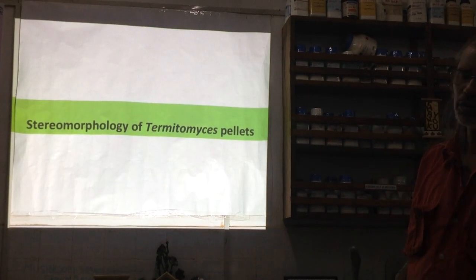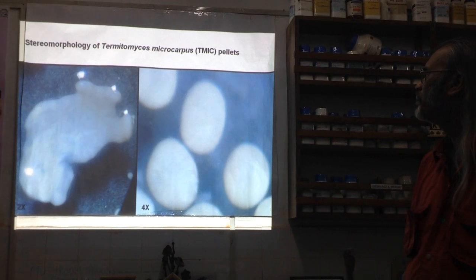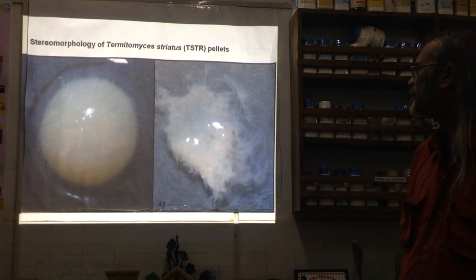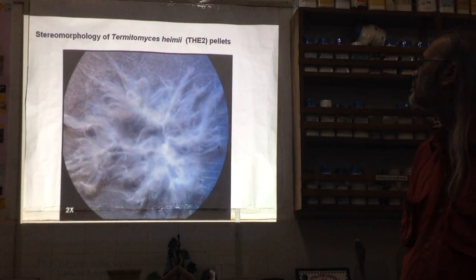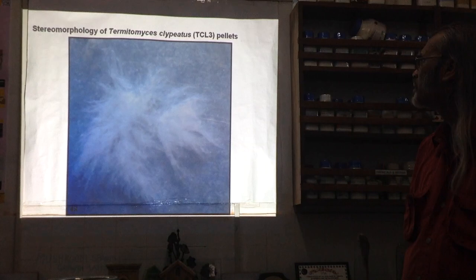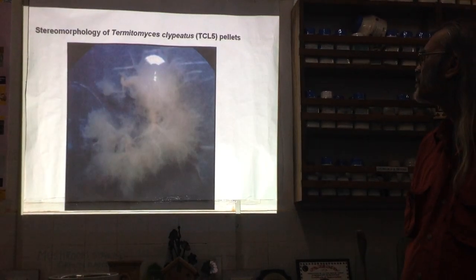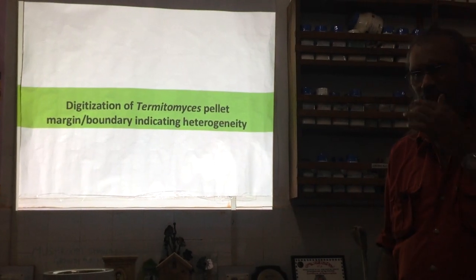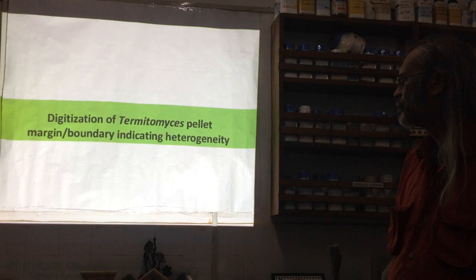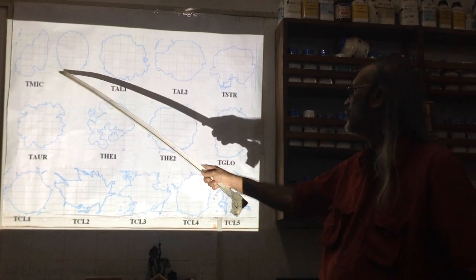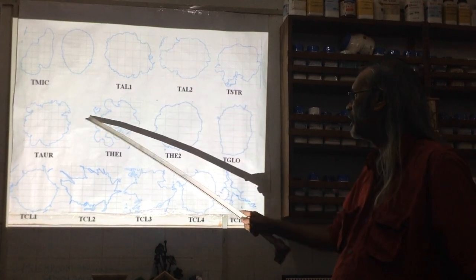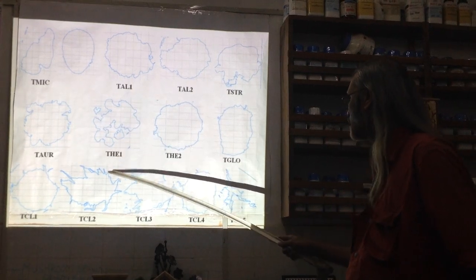Stereomorphology: the pellets are very interesting forms. Microcarpus pellets, albuminosus pellets including hyaline pellets, striatus pellets, aurantiacus pellets, hymii pellets and another hymii strain, globulus pellets, clypeatus pellets and multiple other clypeatus strains are shown. The variation across strains and species is visible. Pellet boundaries were digitized to bring out heterogeneity; the margin and its outer edge are very important when magnified to study fractal dimension and isotropy.